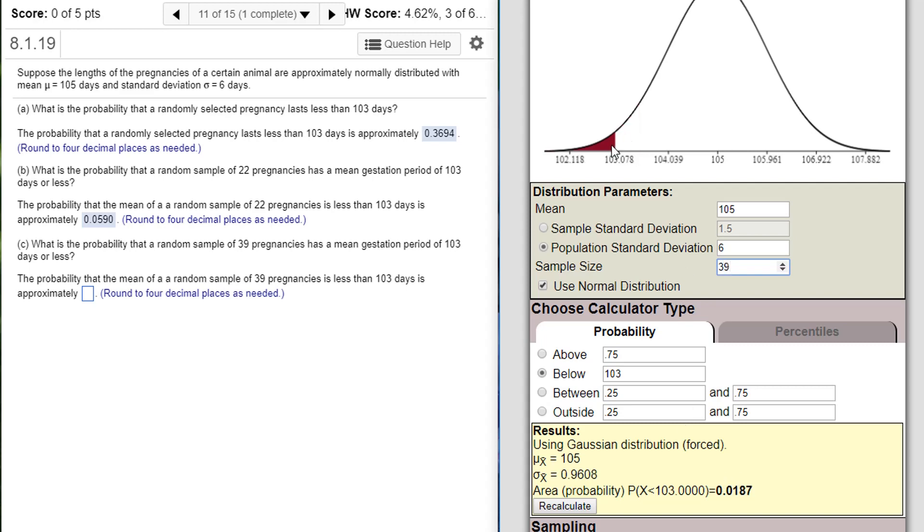And now you can see it's even smaller, even more further into the tail because as I increase the sample size my standard error decreases and decreases. So then 103 is going to be further and further out into the tail. So 0.0187.